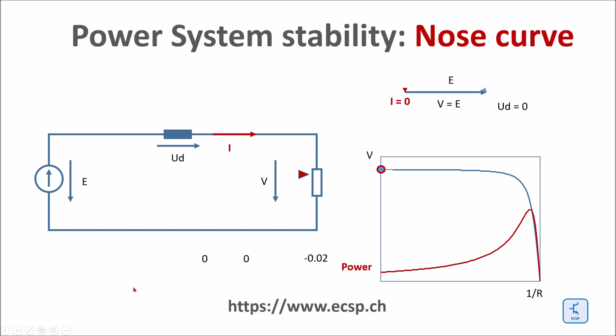The final step needed to be done in order to get the nose curve is that instead of printing the voltage over the impedance at the load, meaning this resistance, I print the voltage over the power at the load. This is what I can see here. This is not a typical nose curve. As before, I vary the load, but this time I get the nose curve, as you can see here.